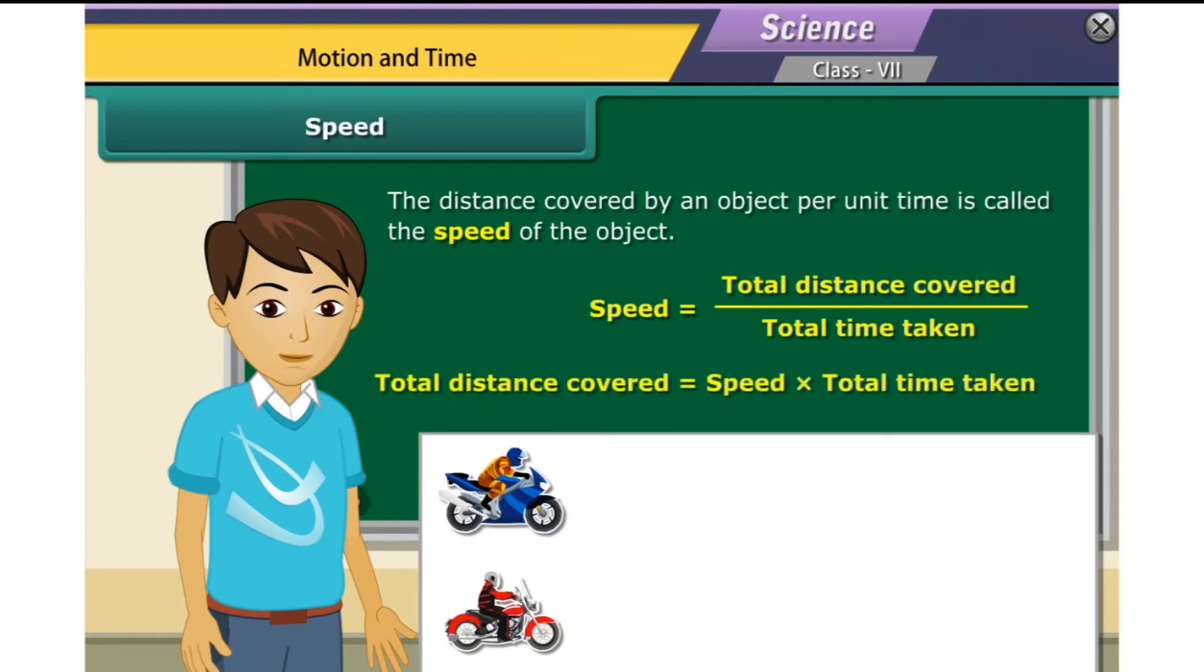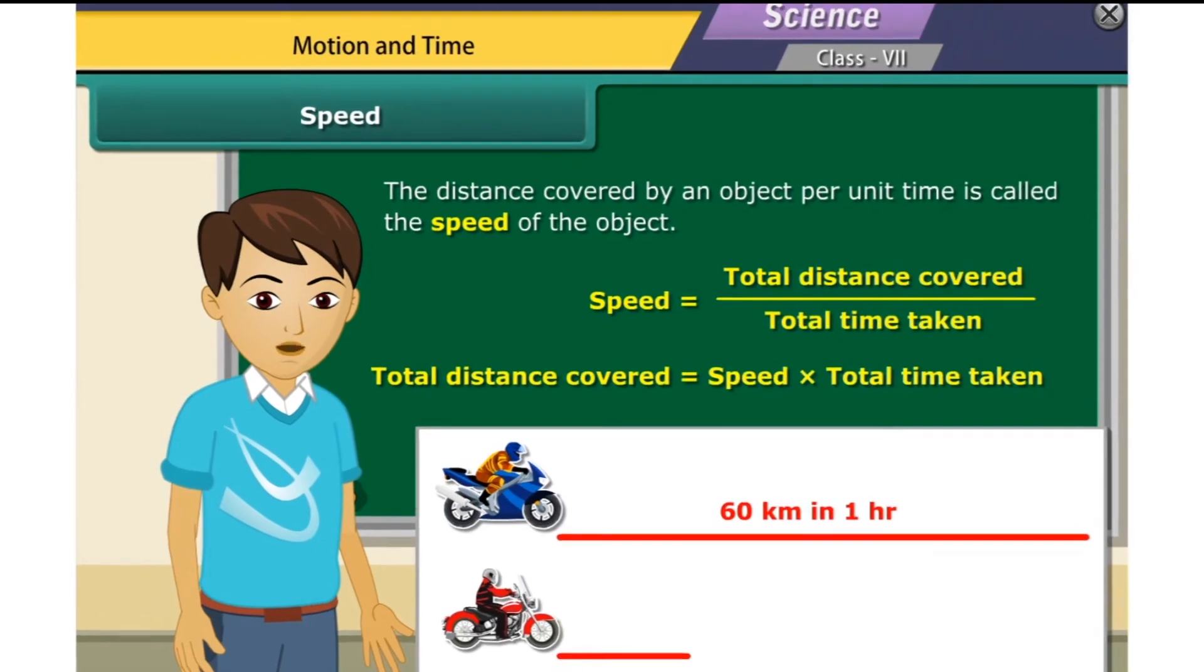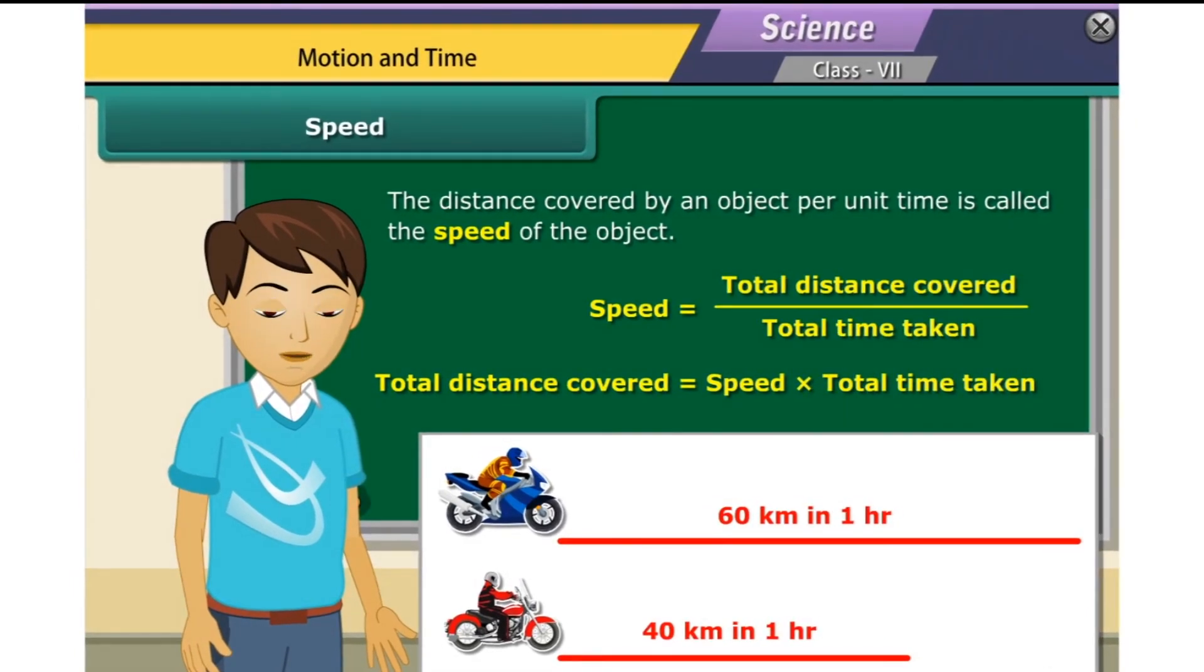Suppose your brother claims that his motorbike is faster than his friend's. His friend denies. You know that your brother's motorbike covers a distance of 60 km in an hour, whereas his friend's bike covers 40 km in an hour. Let us now check the claims of your brother and his friend.